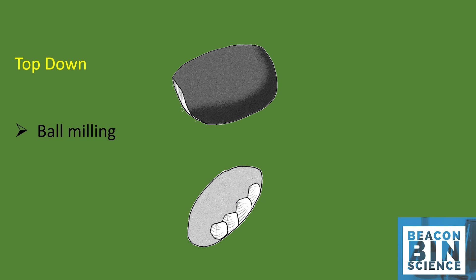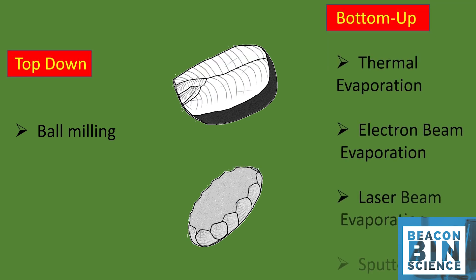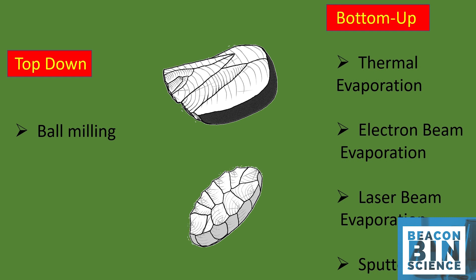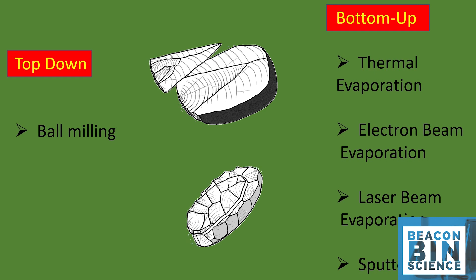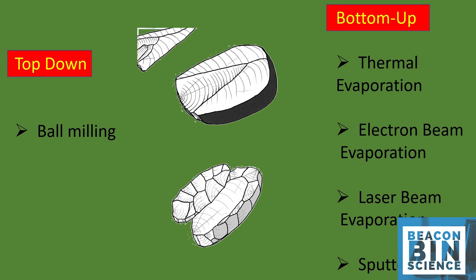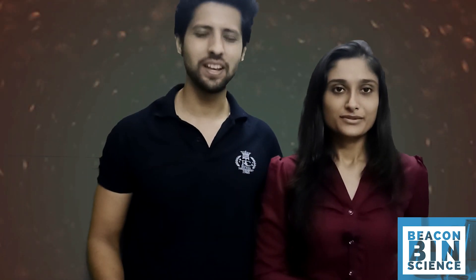So far in this video we have discussed ball milling for the top-down approach, and thermal evaporation, electron beam evaporation, laser beam evaporation, and sputtering for the bottom-up approach. Comment your favorite method out of all of these. We will be discussing chemical and other methods in the next video, which is going to be much more exciting and informative. So do subscribe to our channel and press the bell icon so that you don't miss any of our videos. See you in the next video.